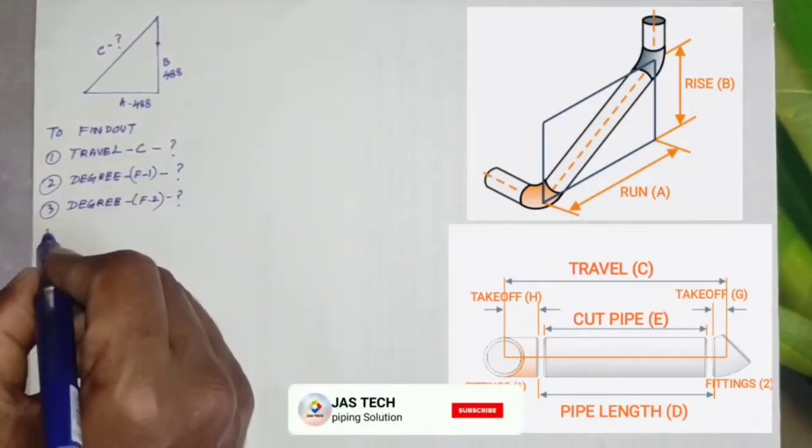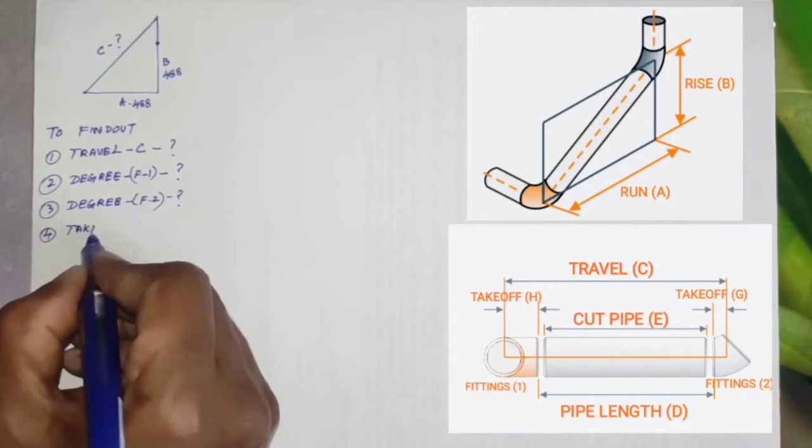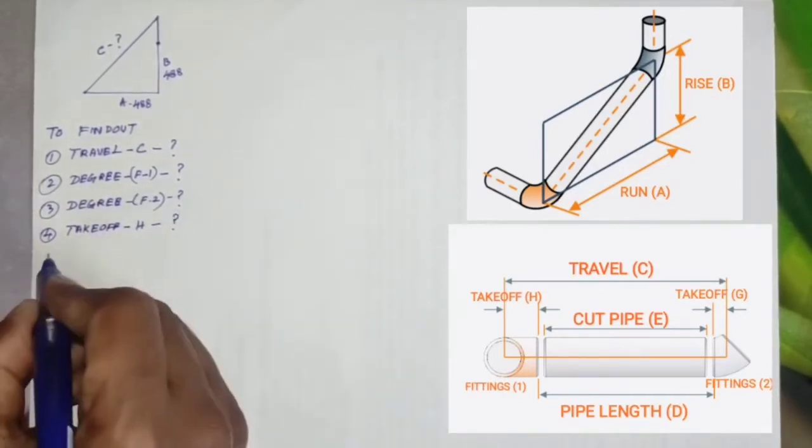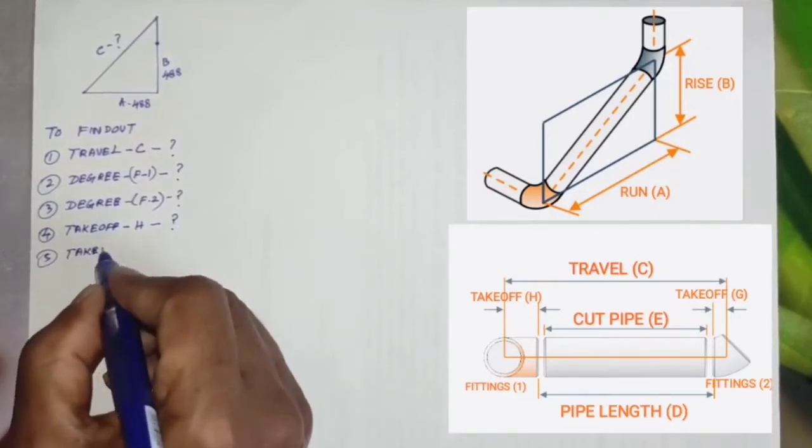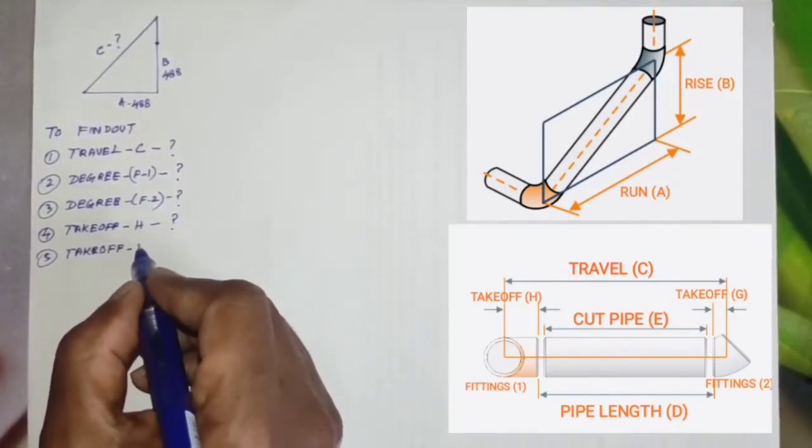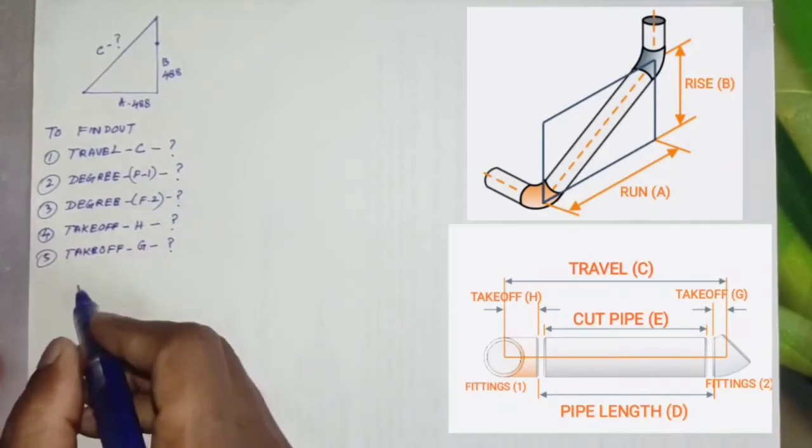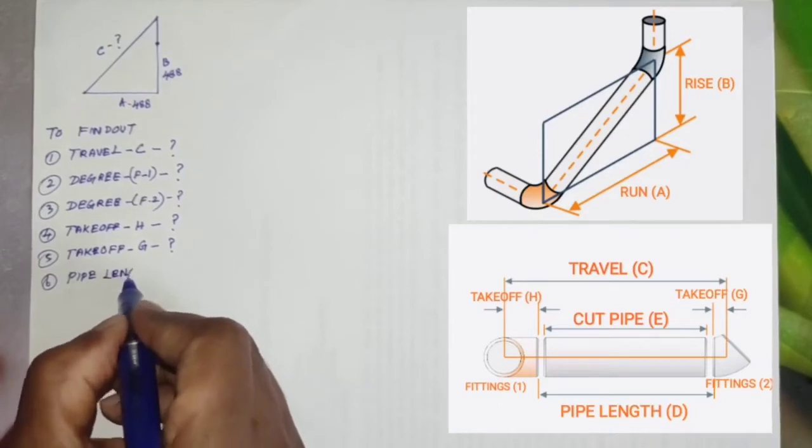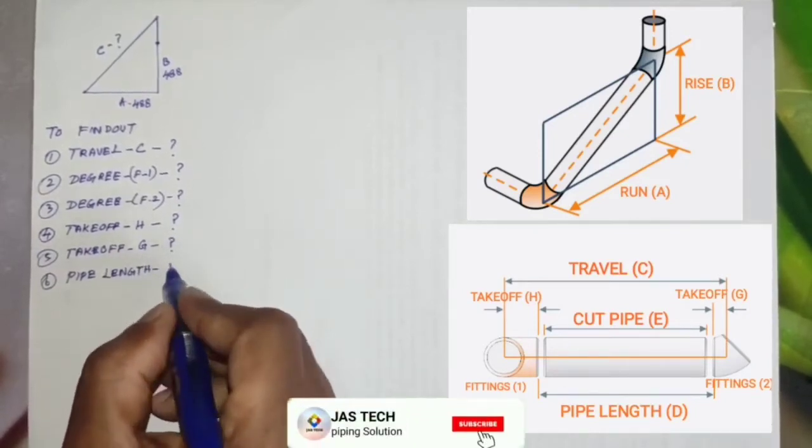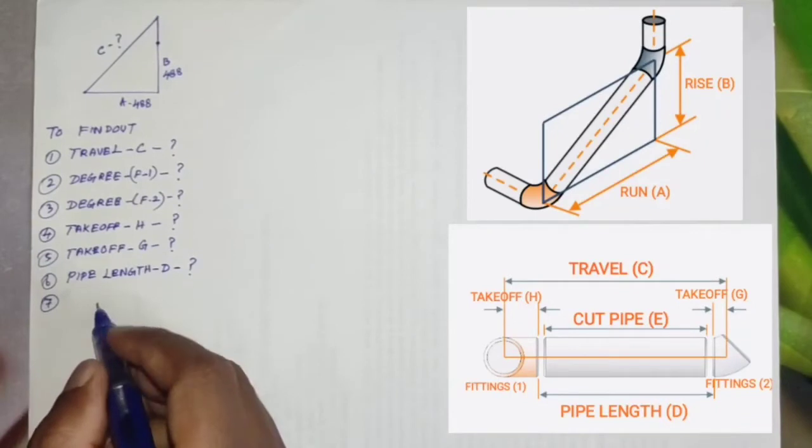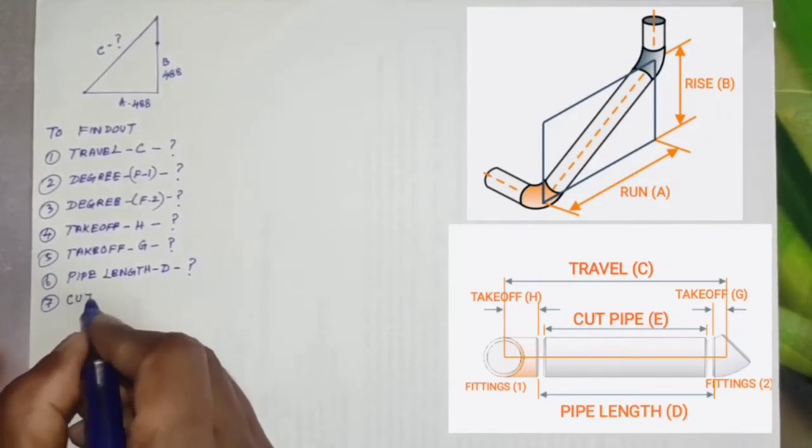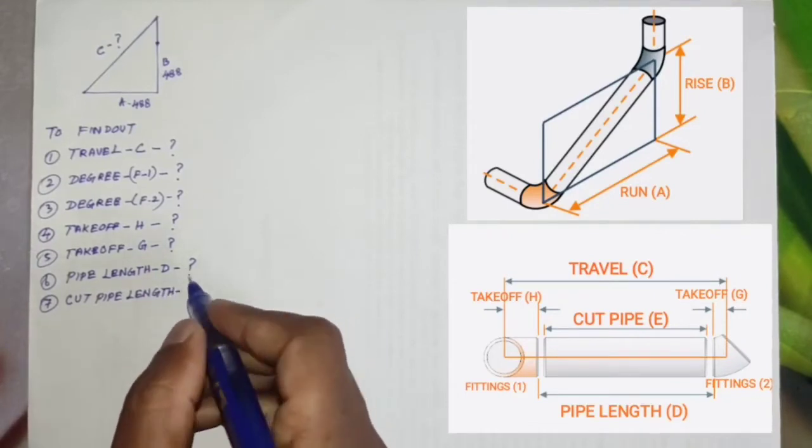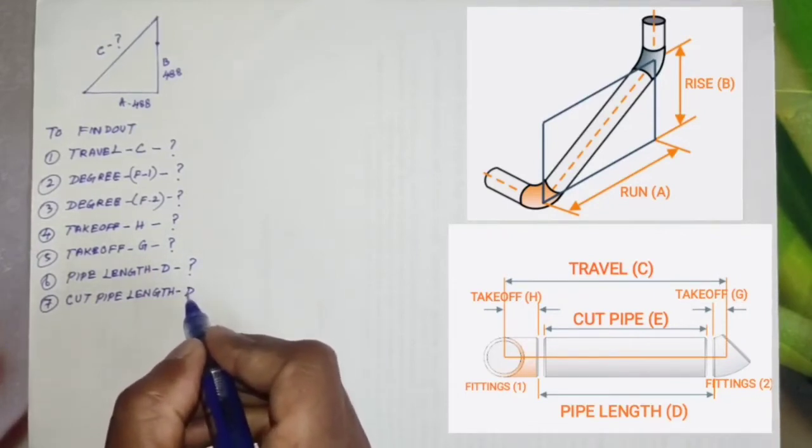third, to find out degree for fittings two; fourth, takeoff for H side fitting; fifth, takeoff for G side; sixth, to find out pipe length D; and the last one, seventh, cut pipe length E.